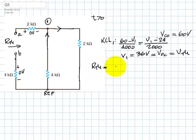RThevenin is going to be 2 kilos plus 4 kilos, those two, and then that in series with 4 in parallel with 2 kilos. I do the math, and I get 22 thirds of a kilo-ohm. That is RThevenin.